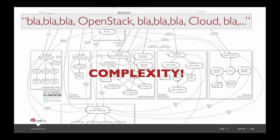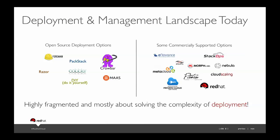This is a lot of complexity with OpenStack — most of the deployment tools are all about solving the complexity in terms of deployment. On the open-source side you'll see tools like Foreman, which Red Hat uses today, PackStack, Cobbler, or you can roll your own solution. On the commercially supported side you've got Cloud Scaling, Piston, and others. The takeaway is this is a very fragmented landscape, and the main focus of all these tools is just about deployment. Once you stand up a cloud, what's next?